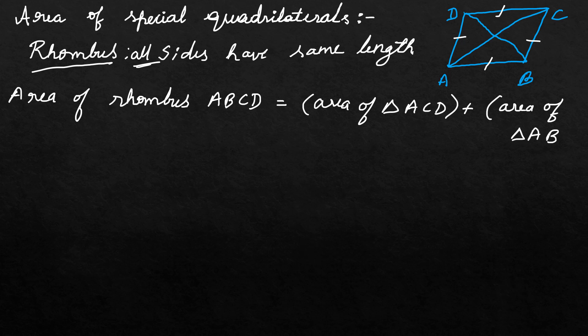Area of triangle ABCD is half into base into height. Since ABCD is a rhombus, diagonals are perpendicular bisectors of each other. Can you see that it's perpendicular in the shape? The diagonals are perpendicular.